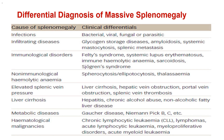There are many differential diagnoses, since Tropical Splenomegaly Syndrome is a diagnosis of exclusion. We must exclude infectious causes, infiltrating diseases, immunologic disorders, liver cirrhosis, metabolic causes, and hematologic malignancies that cause massive splenomegaly.